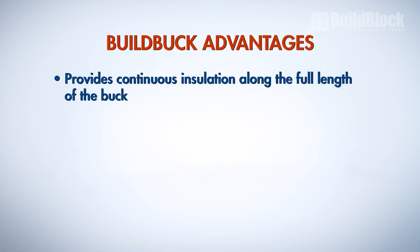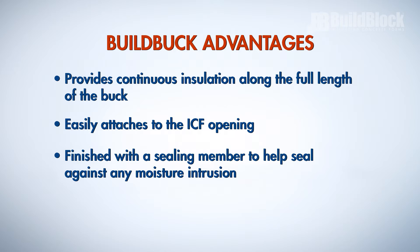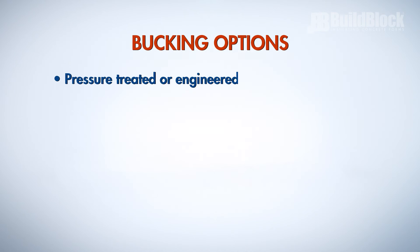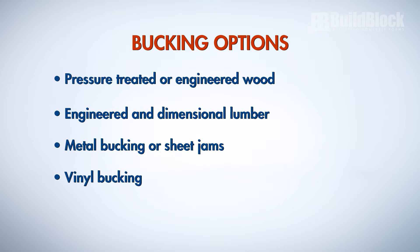BuildBlock highly recommends the use of an ICF foam bucking to prevent any thermal bridging around doors and windows. BuildBlock provides continuous insulation along the full length of the buck. It easily attaches to the ICF opening, is finished with a sealing member to help seal against any moisture intrusion, and has a molded-in tape measure and cut lines for simple cutting and sizing. Other bucking materials include pressure-treated or engineered wood, engineered and dimensional lumber, metal bucking or sheet jams, and vinyl bucking.